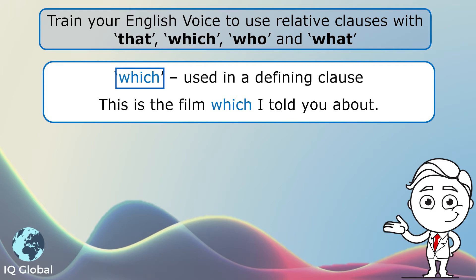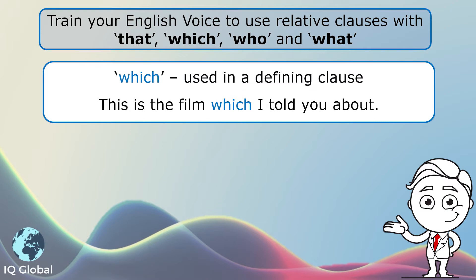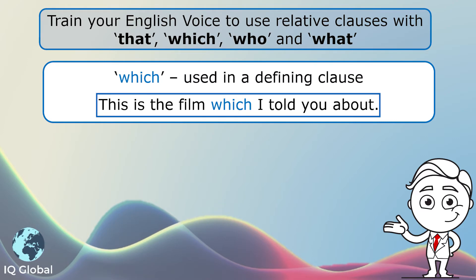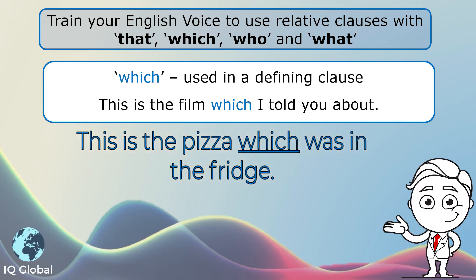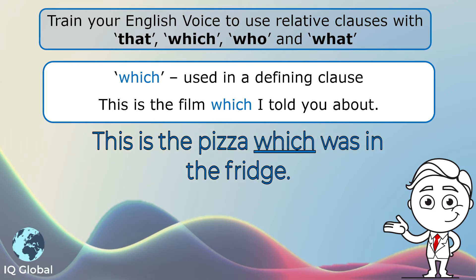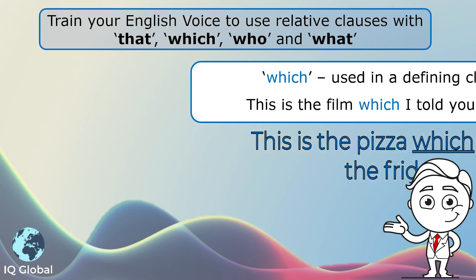Next, 'which'. Which is used in a defining clause. For example: 'This is the film which I told you about.' This is a defining clause which defines the film as the one I told you about. Another example: 'This is the pizza which was in the fridge.' This is a defining clause — it defines the pizza as the one in the fridge.